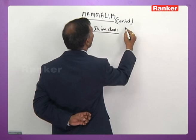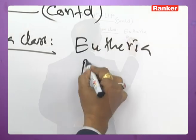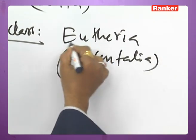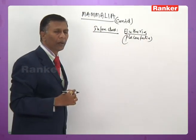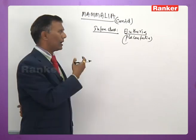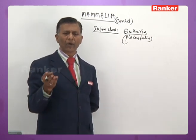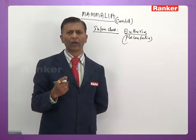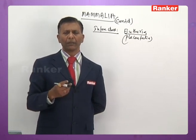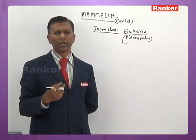Infraclass Eutheria is also called Placentalia. All the characters studied under Mammalia are applicable to Eutheria: exoskeleton in the form of hair; lower jaw with a single bone called dentary; mammary glands are modified sebaceous glands with teats or nipples; coracoid is reduced; precoracoid, epicoracoid, and interclavicle are absent in the pectoral girdle.